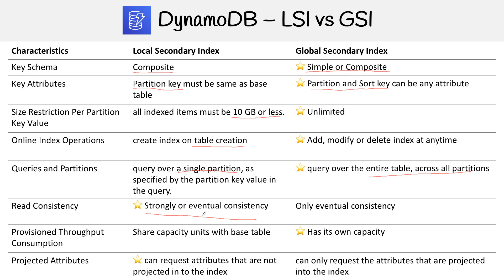For provisioned throughput consumption, LSI shares capacity with the base table, so you're more likely to get throttled. But for GSIs, it has its own capacity, so it's not going to affect the base table.